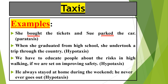'When she graduated from high school, she undertook a trip through the country.' We find the first and second finite verbs. 'She undertook a trip through the country' is the independent clause, and 'when she graduated from high school' is the dependent clause — because it begins with a subordinating conjunction, which is an adverbial conjunction of time. 'We have to educate people about the risk in high walking if we are set on improving safety.' Again, we have a dependent clause and an independent clause. When we have two independent clauses of equal rank, we have parataxis; when one is dependent and the other independent, we have hypotaxis.